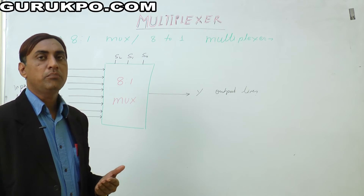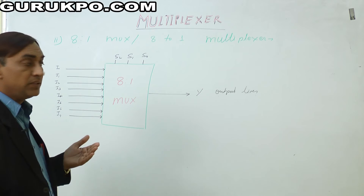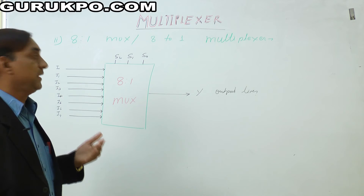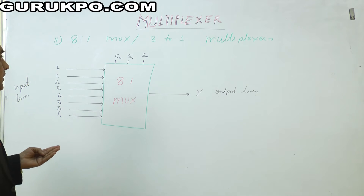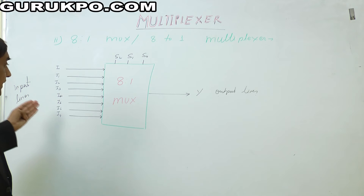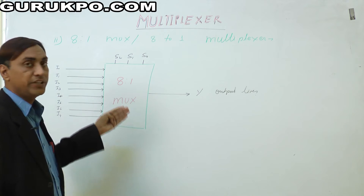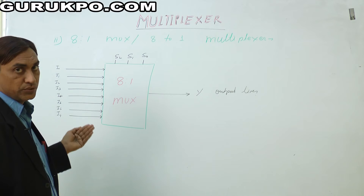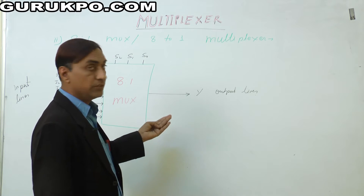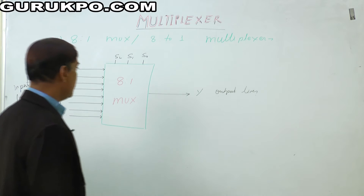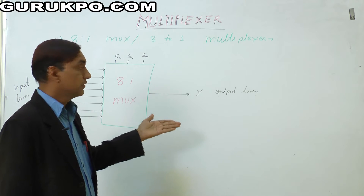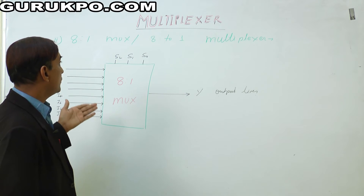Another example of multiplexer: the 8 to 1 mux, full name 8 to 1 multiplexer. In the block diagram of the 8 to 1 mux, 8 input lines come from any information, and we have three data selectors: S0, S1, and S2. The output comes on Y — one output line. Many inputs come in and we receive one line, that is why this is called the 8 to 1 mux.